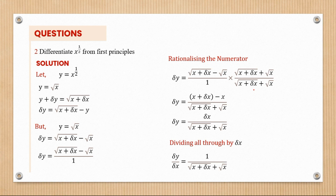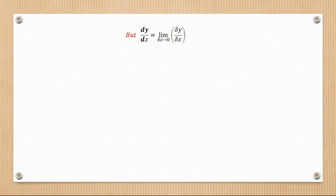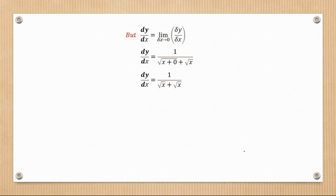An important thing to remember: every time we reach the end and want to set the remaining Δx equal to zero, we must avoid leaving a zero alone at the denominator, as that would introduce an error. But here it is safe to introduce zero because we won't end up with a zero in the denominator. So dy/dx equals 1 over root(x) plus root(x), which is 1 over 2·root(x). That's the final answer.